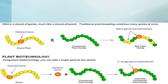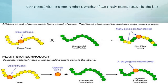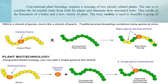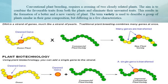Conventional plant breeding requires a crossing of two closely related plants. The aim is to combine the favorable traits from both the plants and eliminate their unwanted traits. This results in the formation of a better and a new variety of plant. The term variety is used to describe a group of plants similar in their gene composition, but differing in a few characteristics.